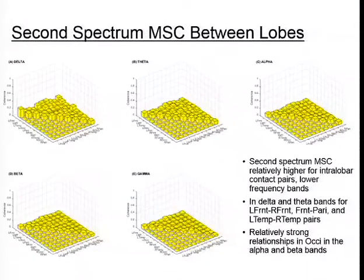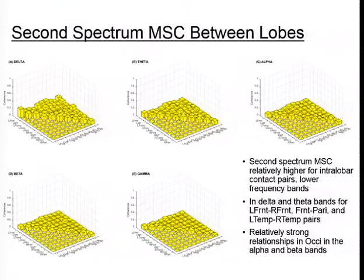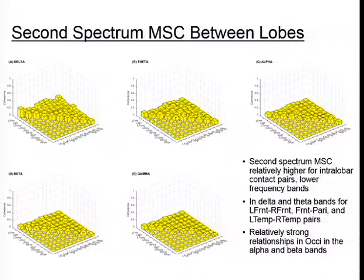We also looked at second spectrum coherence between different lobes of the brain. Second spectrum coherence estimates are relatively higher for intra-lobar contact pairs — within the same lobe — and we see the same graded relationship with frequency where lower frequencies have higher levels of relationship. The intra-lobar pairs are the ones on the diagonal in each of these plots. In the delta and theta bands, we see enhanced relationships between left frontal and right frontal, frontal and parietal overall, and between left and right temporal pairs. We also see relatively strong relationships in the occipital lobes in the alpha and beta bands.